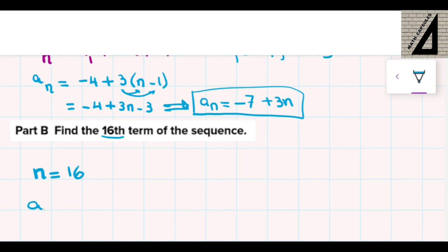This means that a sub 16 is equal to negative 7, I'm just substituting in this explicit formula, plus 3 times n, which is 16 also. So this would be negative 7 plus 3 times 16. This is 48, and 48 minus 7 equals 41.